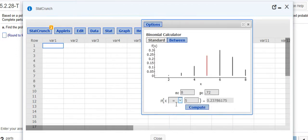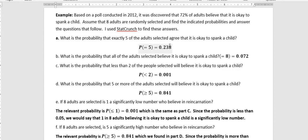We want to know exactly five. And so, if we put in exactly five, we get 0.23786. And so, I'm rounding to the third place here, so that would be 0.238. You can see that I got 0.238 when the probability was exactly five.